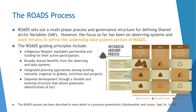The SEAN Roadmap for Arctic Observing and Data Systems, or ROADS, has been developed to help manage the complexity of the Arctic data situation. It sets out a multi-phase process and governance structure for defining shared Arctic variables that will provide benefits across a wide range of stakeholders and scales. However, the focus so far has been on observing systems and work remains to define the underlying data systems. The ROADS guiding principles that have evolved for Arctic observing systems also apply to Arctic data systems. Elements of those principles include Indigenous peoples' equitable partnership and funding for their active participation, broadly shared benefits from observing and data systems, integrated planning approaches among existing networks, activities, and projects, and stepwise development through a flexible and evolving structure that allows grassroots identification of foci.